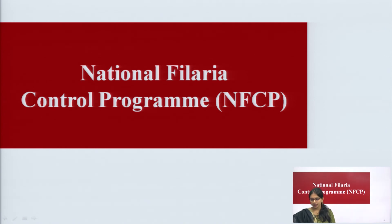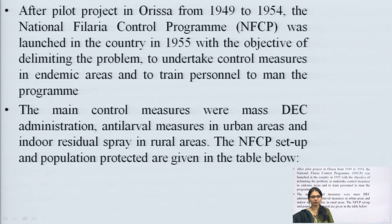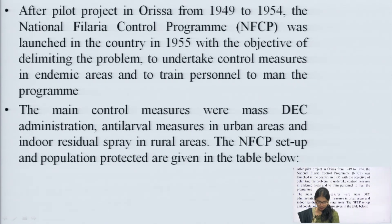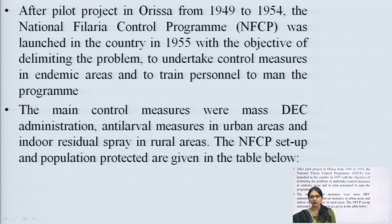The National Filarial Control Program (NFCP), after a pilot project in Orissa from 1949 to 1954, was launched in 1955 with the objective of undertaking control measures. The main control measure is diethylcarbamazine (DEC). DEC combined with albendazole is more effective than albendazole alone in preventing filariasis.